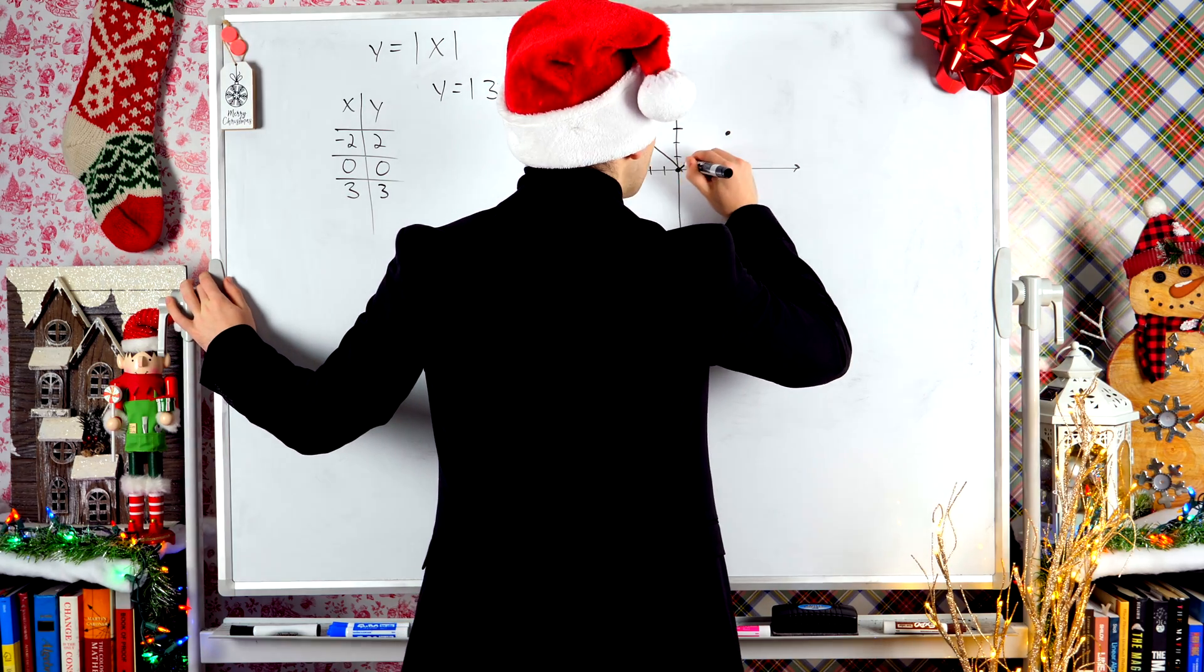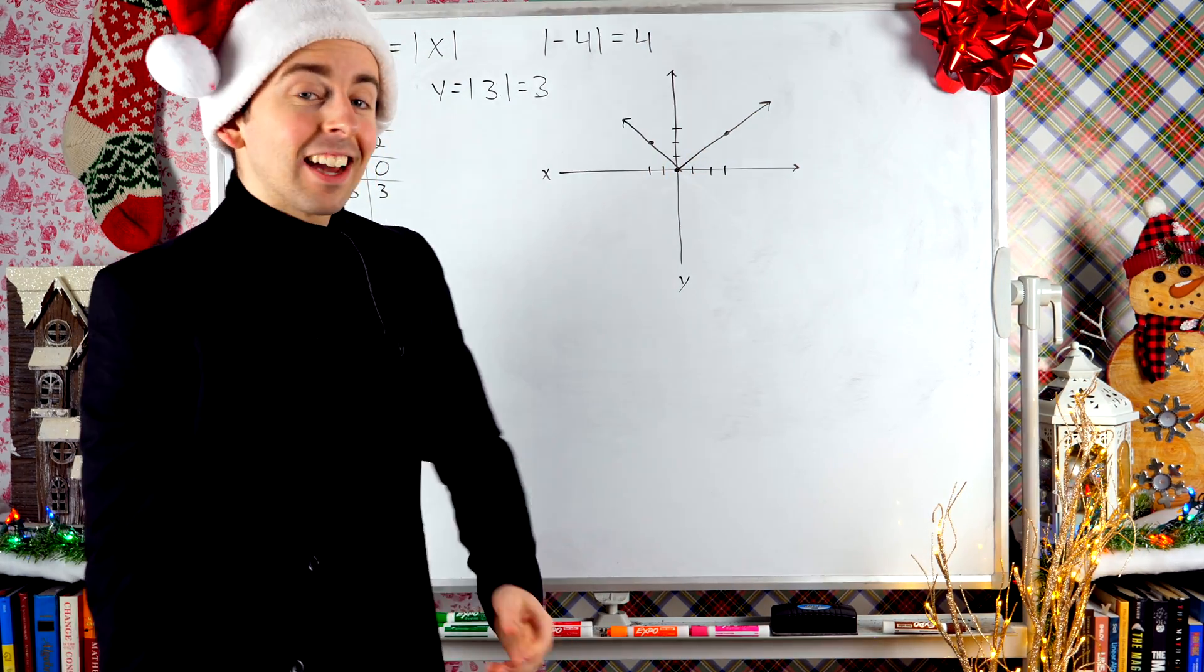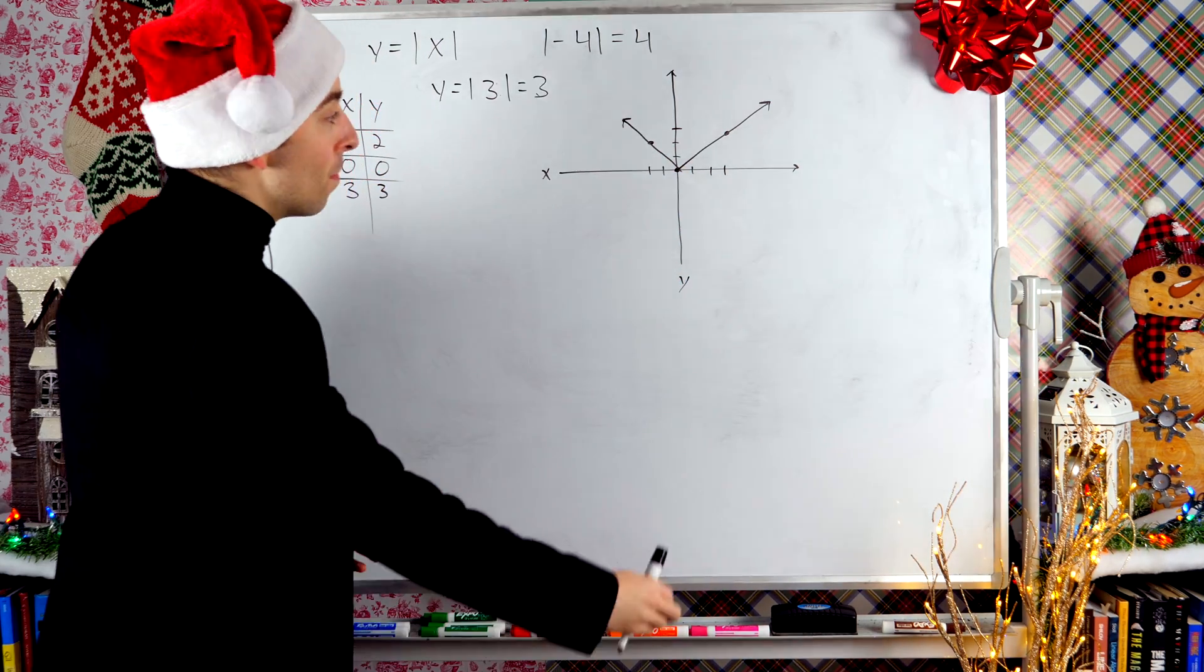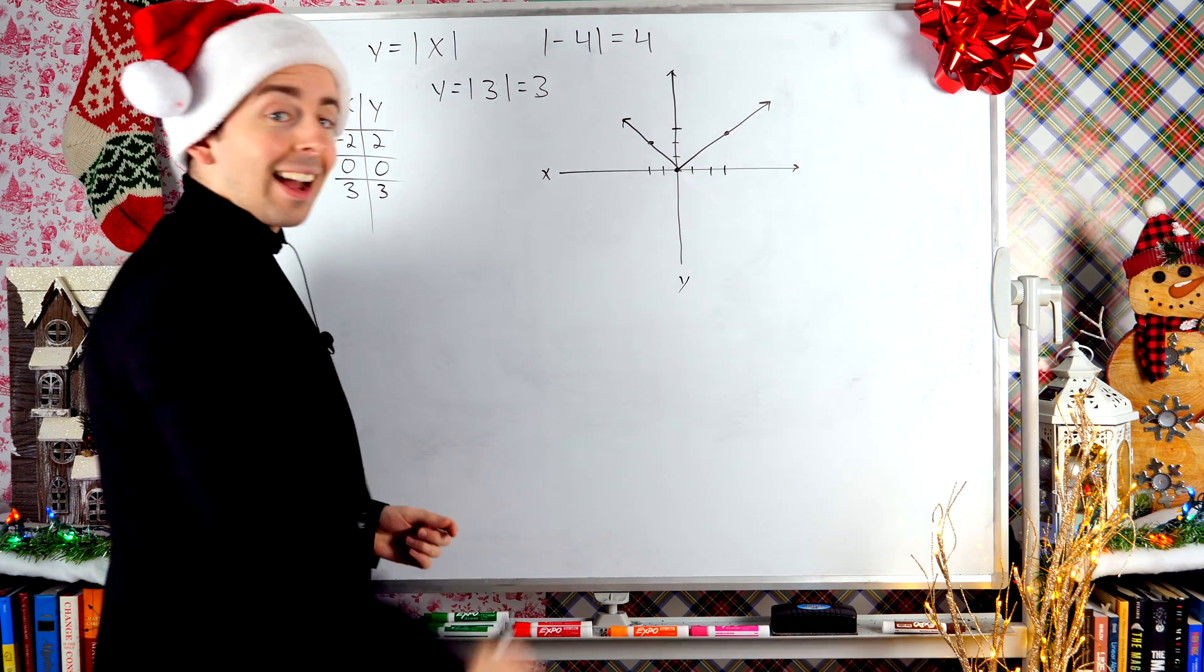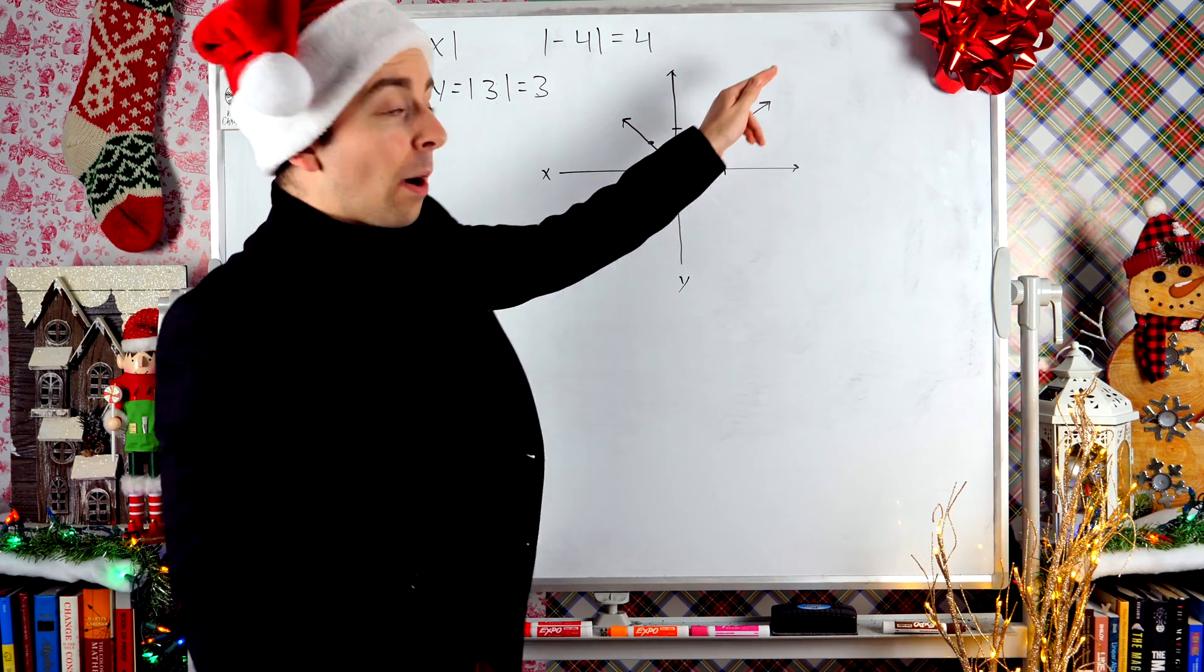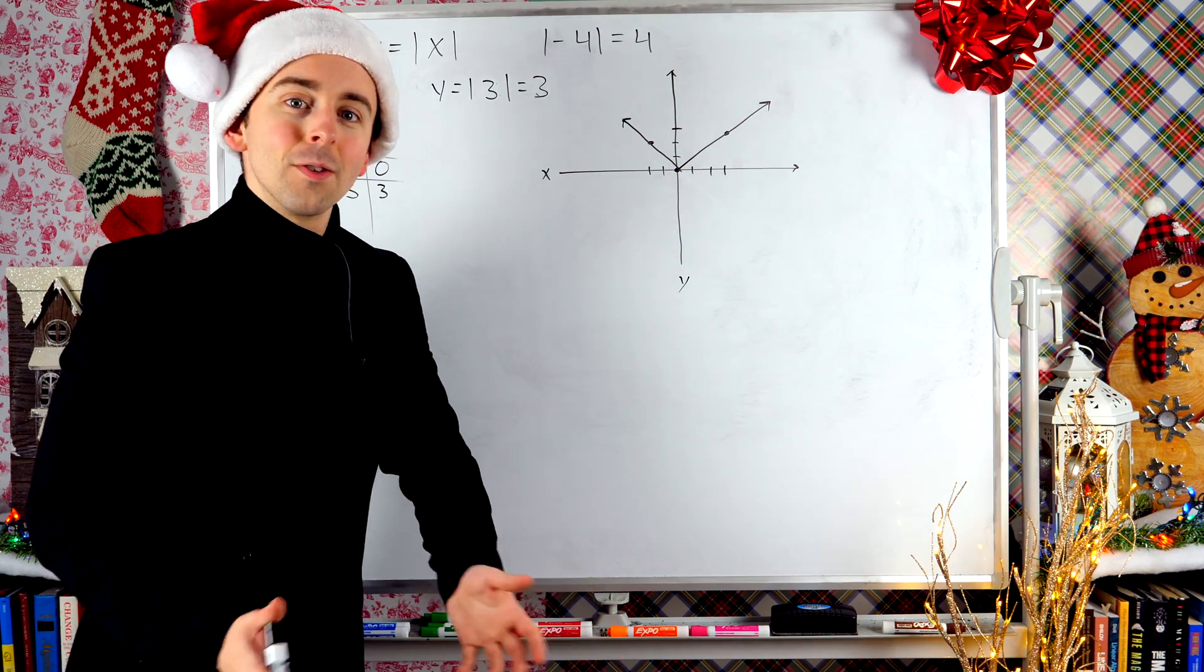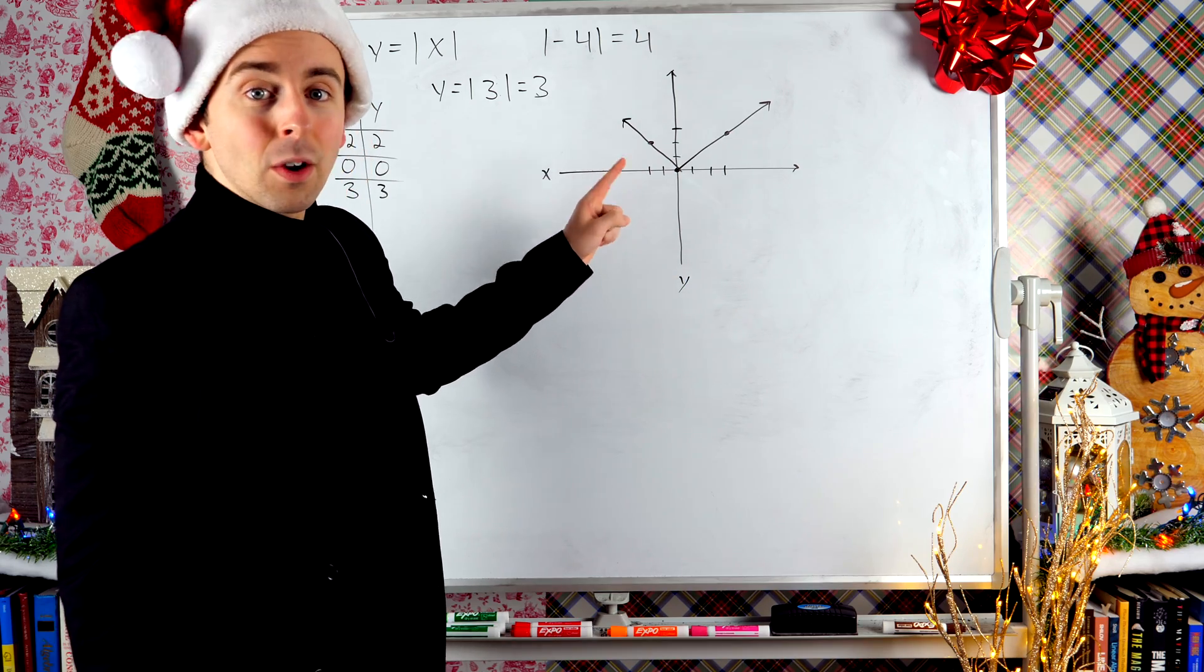Absolute value of x actually looks like that. It's got a very signature v shape. It's got a v shape because once we get to y equals zero on the x axis, we've got to bounce back up because we can't be negative. It's absolute value. Absolute value doesn't get negative. So that's what it looks like.